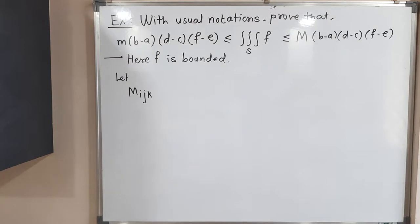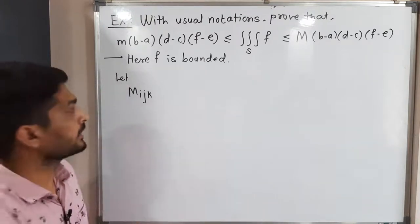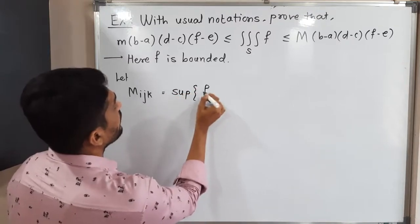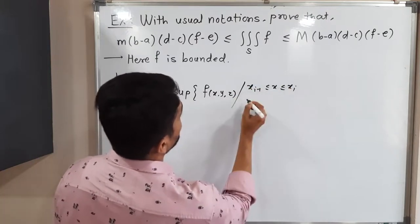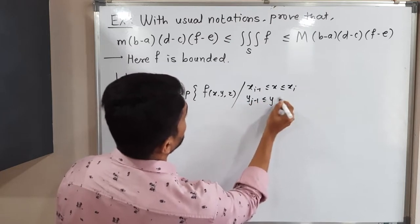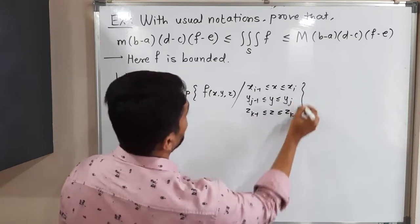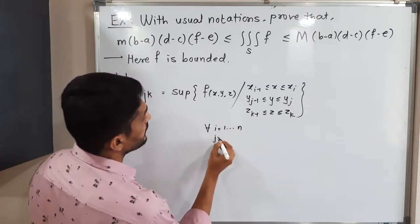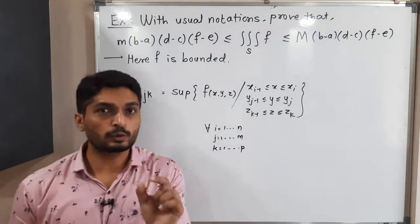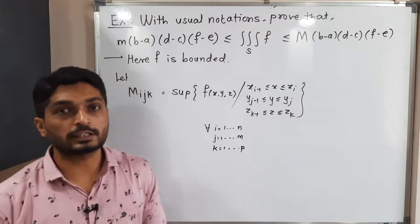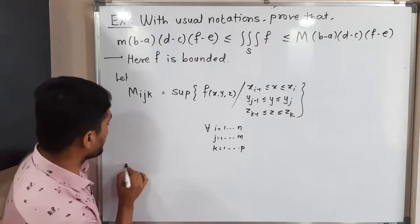Since f is a bounded function, it has a supremum and infimum over each subcuboid. We define M_ijk as the supremum of f(x,y,z) such that x_{i-1} ≤ x ≤ x_i, y_{j-1} ≤ y ≤ y_j, and z_{k-1} ≤ z ≤ z_k, for i from 1 to n, j from 1 to m, and k from 1 to p. That is, M_ijk is the maximum value of the function over each subcuboid.